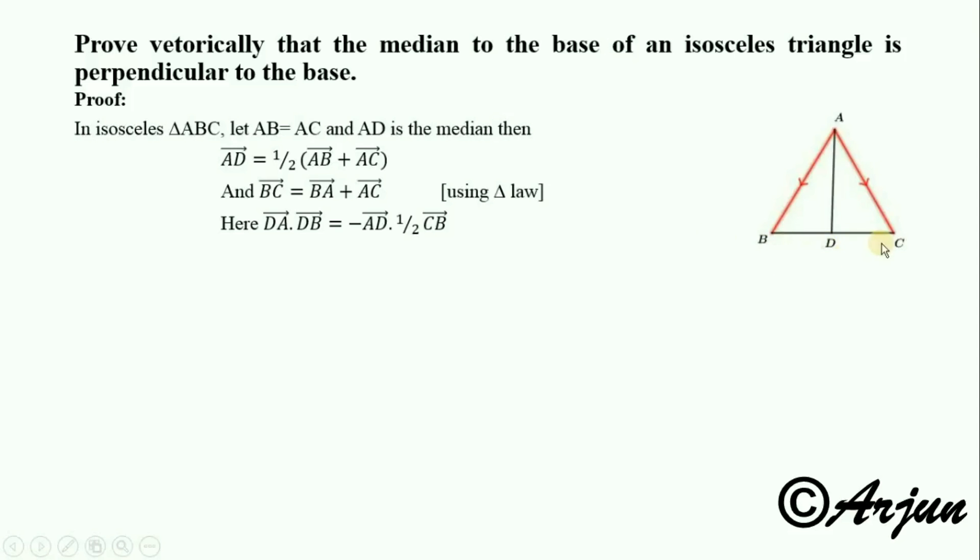AD dot BC equals negative one-half times AD dot BC. Rearranging, negative AD as is, one-half BC with negative vector becomes minus. This gives us one-half AD dot BC.